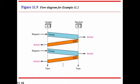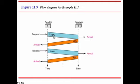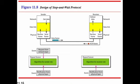In the stop-and-wait protocol, the sender node A sends a frame to receiver node B. Upon arrival, node B sends an acknowledgement confirming it has received the frame. If any error or frame loss occurs, node B sends a negative response, asking the sender to resend the frame. The sender then retransmits the frame accordingly.